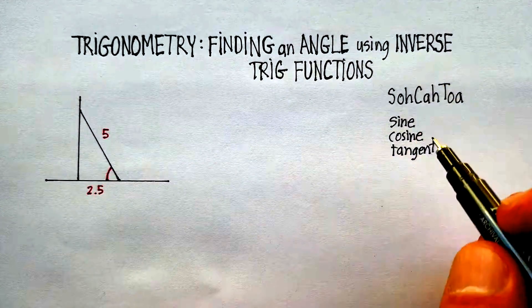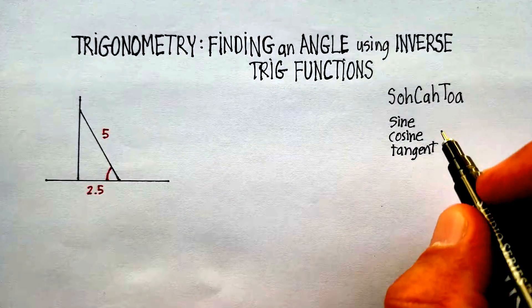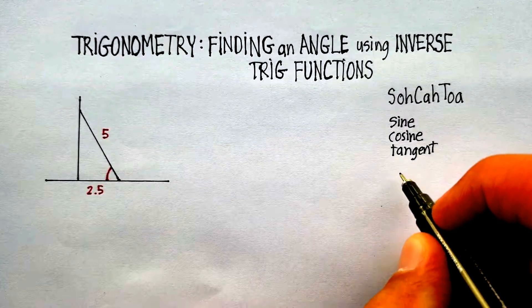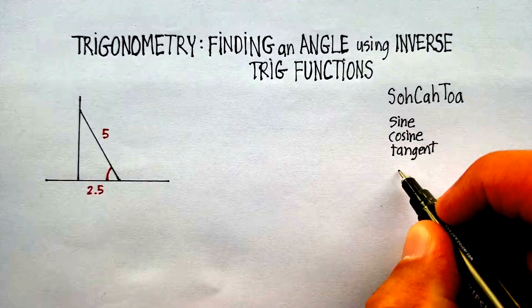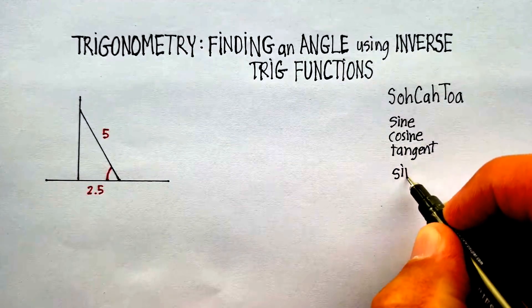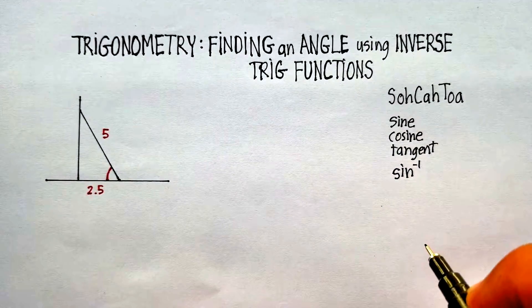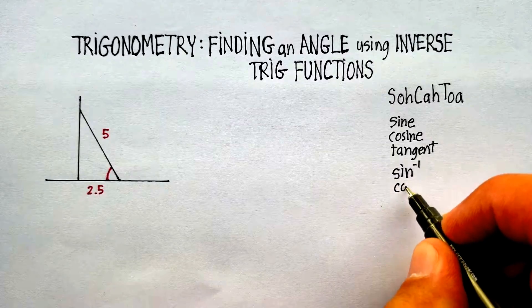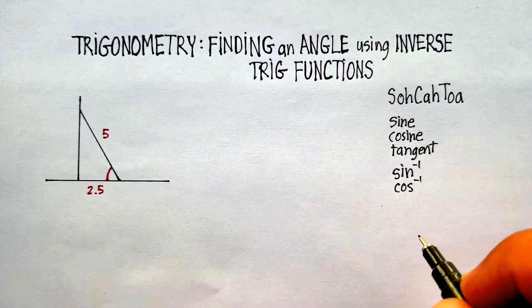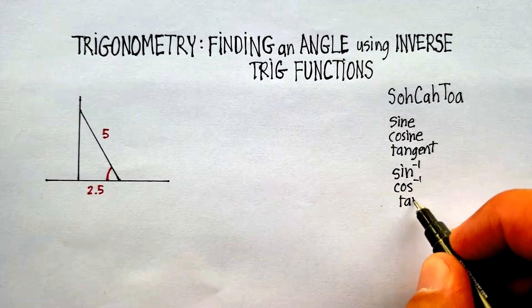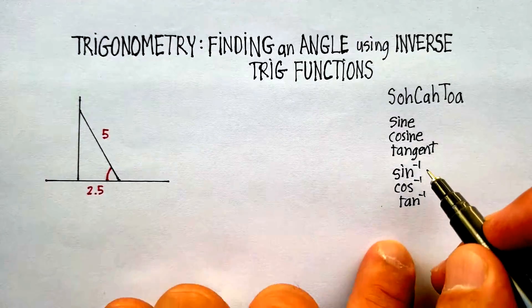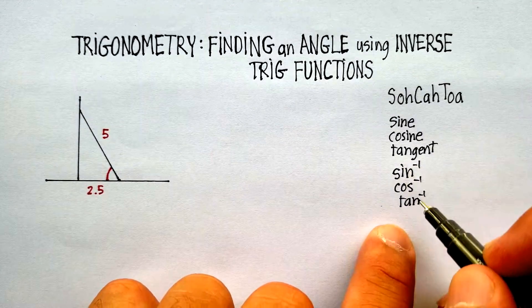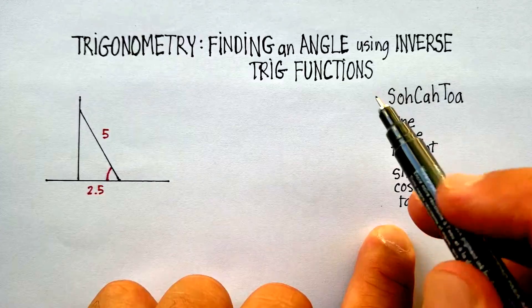Now, how do you write an inverse trig function? An inverse trig function basically looks like this. You would put sine to the negative 1, or cosine to the negative 1, or tangent to the negative 1. And you need to use the inverse trig functions in order to find angles.